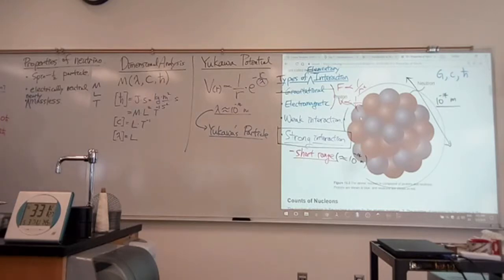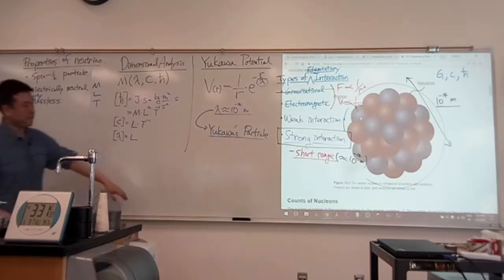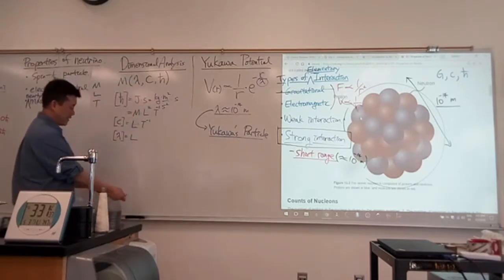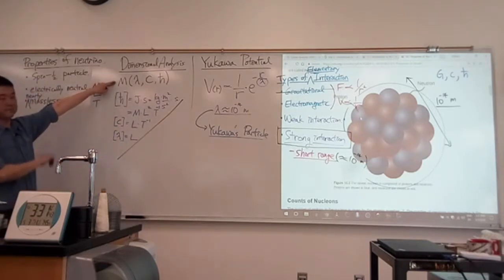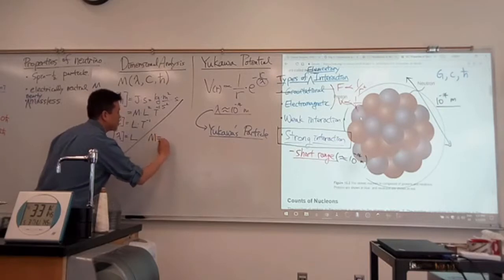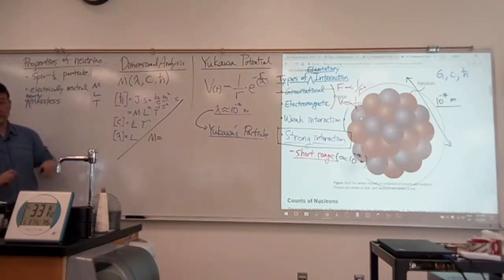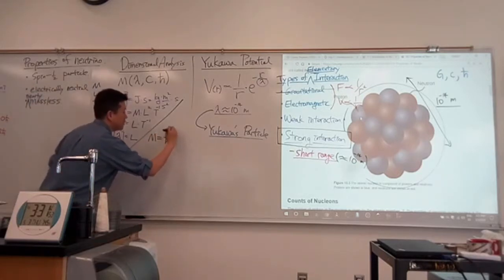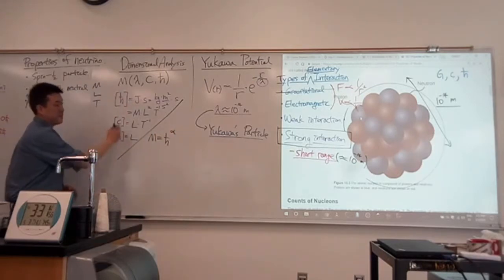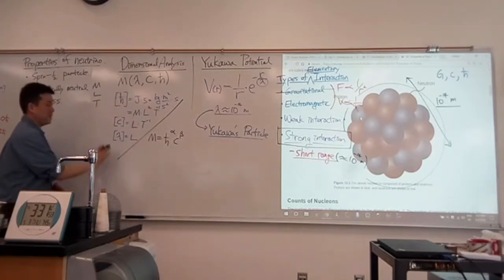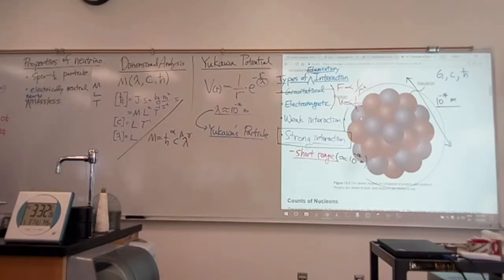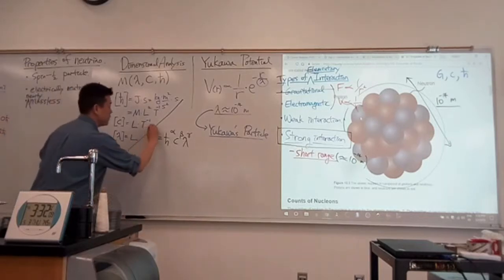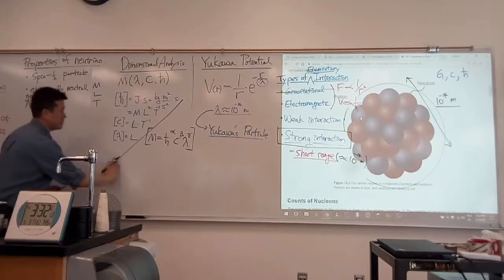First thing I need to do is I need to write down the units of each of these. The Planck's constant, in SI units, it comes in the units of joule times a second. And joule is unit of energy, or if I write this all out, it's a kilogram times meter squared per second squared times a second. The way I remember it is work done is force times distance, so newton times a meter. Newton is mass times acceleration, or kilogram times meter per second squared.